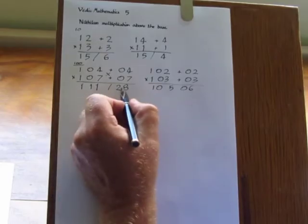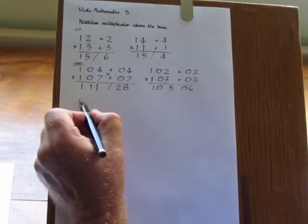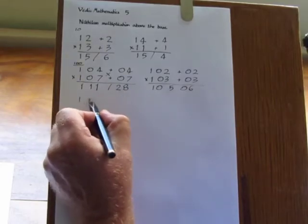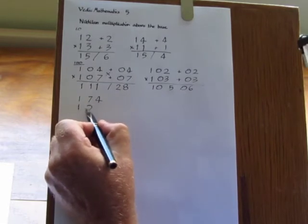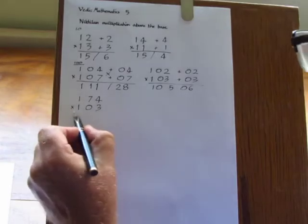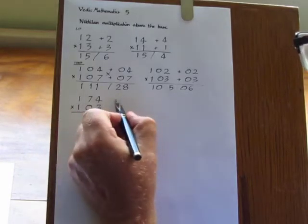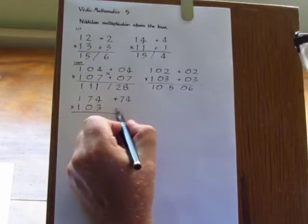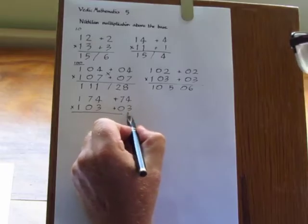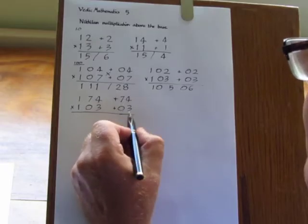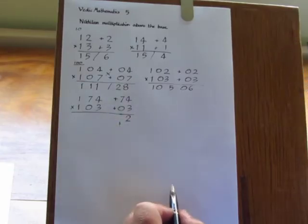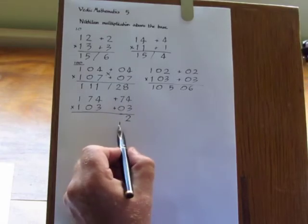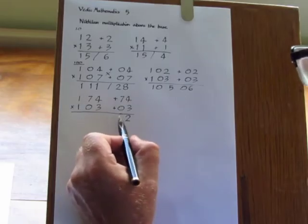If the digits on the right hand side exceed 2 then we need to carry. So for example, 174 times 103. Here we have 74 and 03. We can multiply 74 by 3 digit by digit. 3 times 4 is 12. That's 2 with 1 to carry. 3 times 7 is 21. Add 1 is 22.